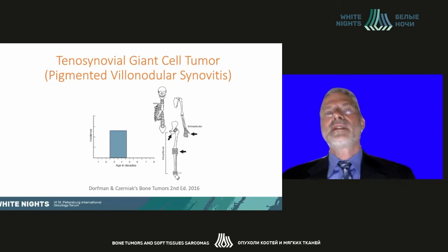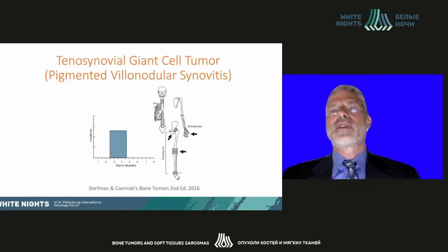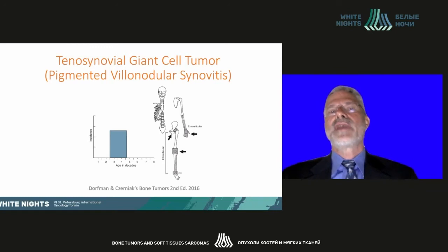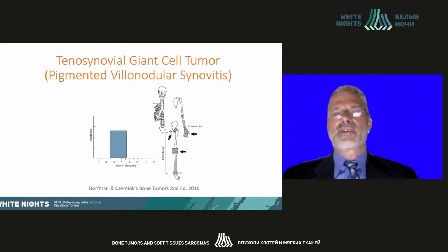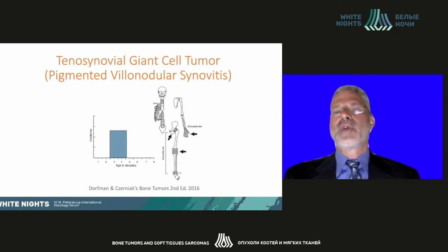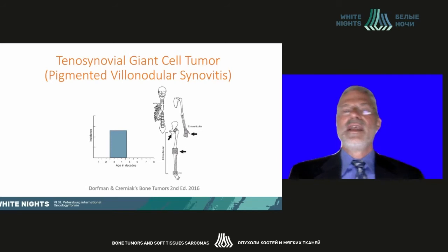The second lesion is tenosynovial giant cell tumor, which is the World Health Organization classification. They can be intraarticular or extraarticular. For the intraarticular variant, these used to be called pigmented villonodular synovitis, with age predilection of 25 to 45. It occurs predominantly in the hands, hip, the knees — the most common site — and the ankle, but it can affect any joint, including the cervical spine and lumbar spine, causing spinal stenosis.